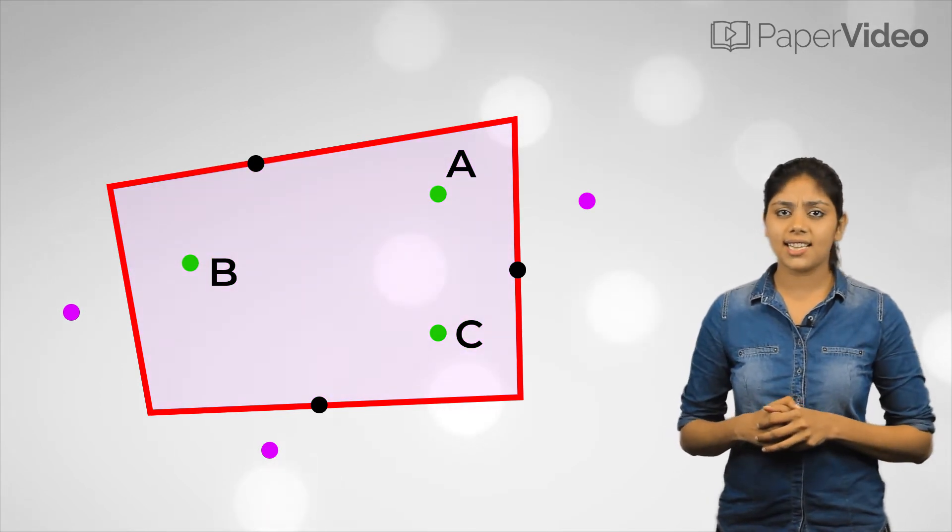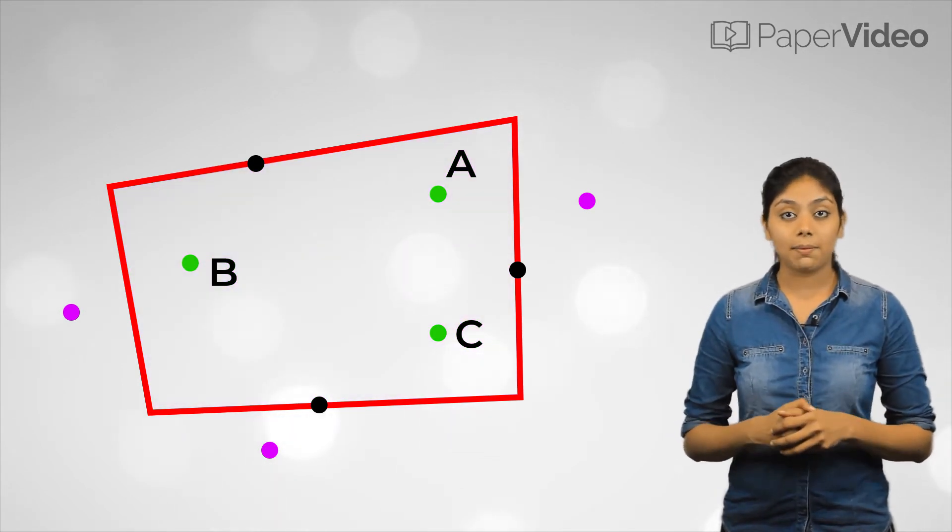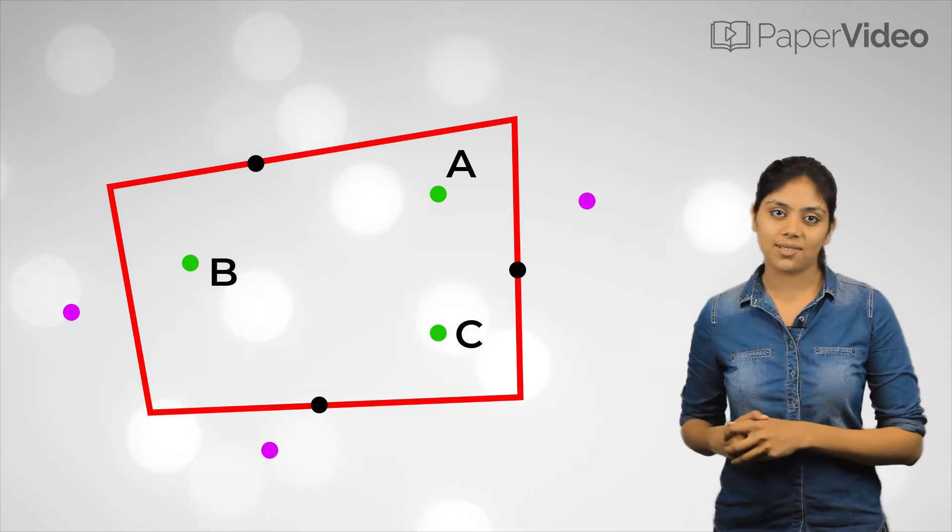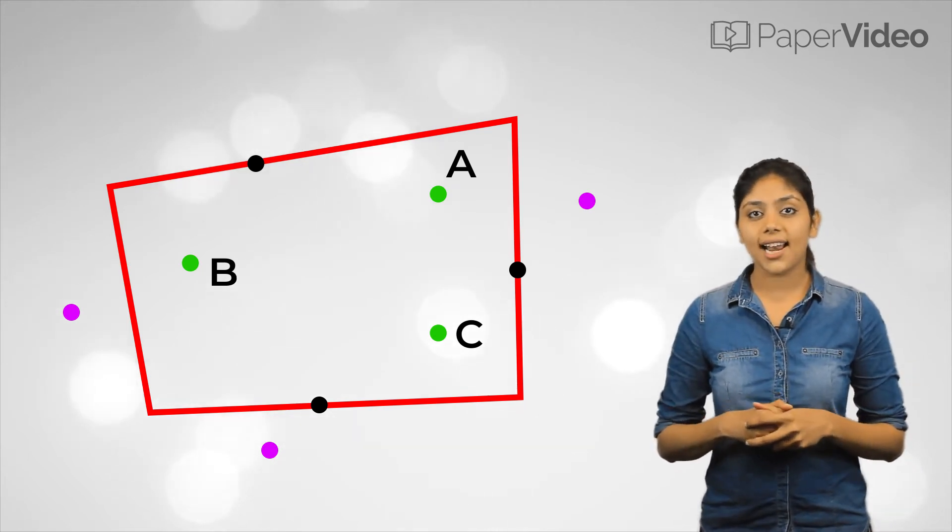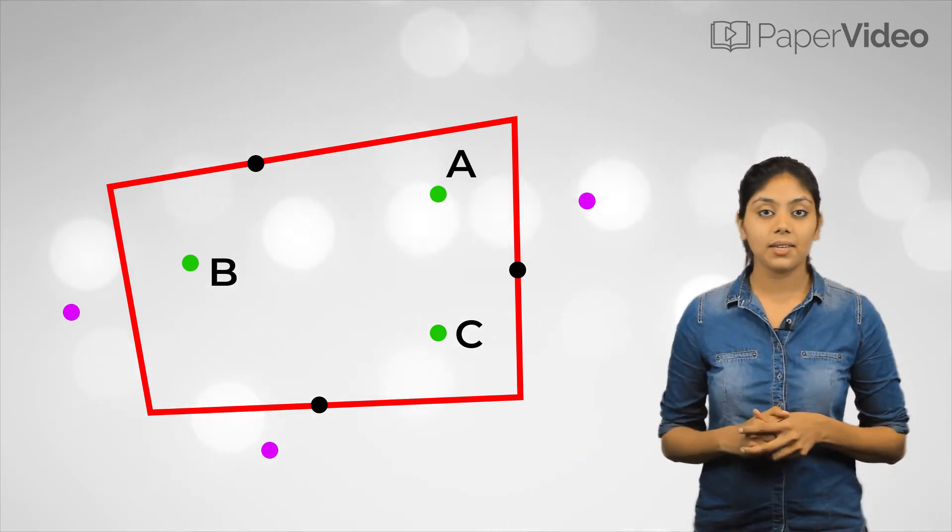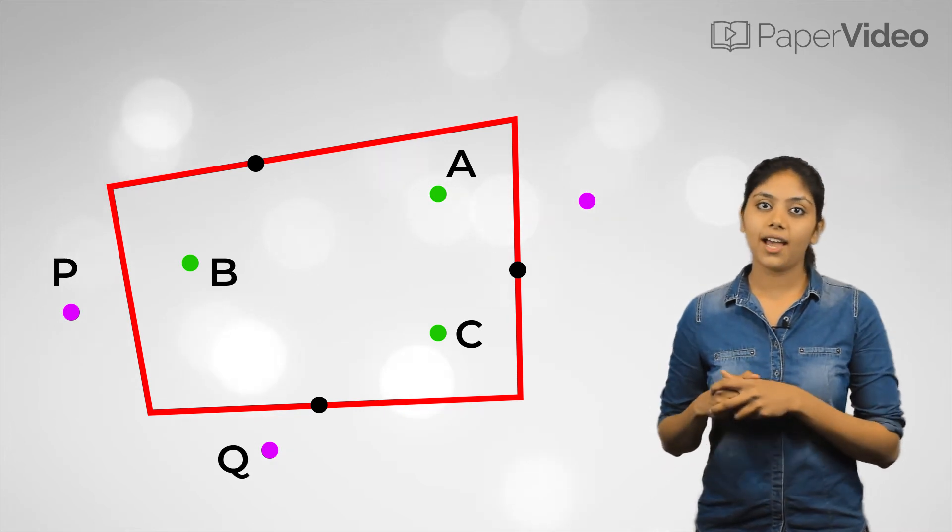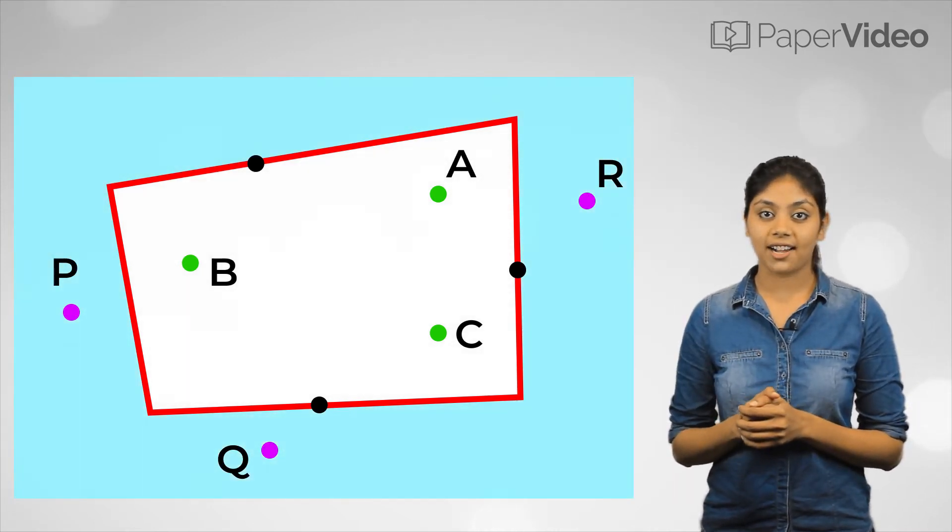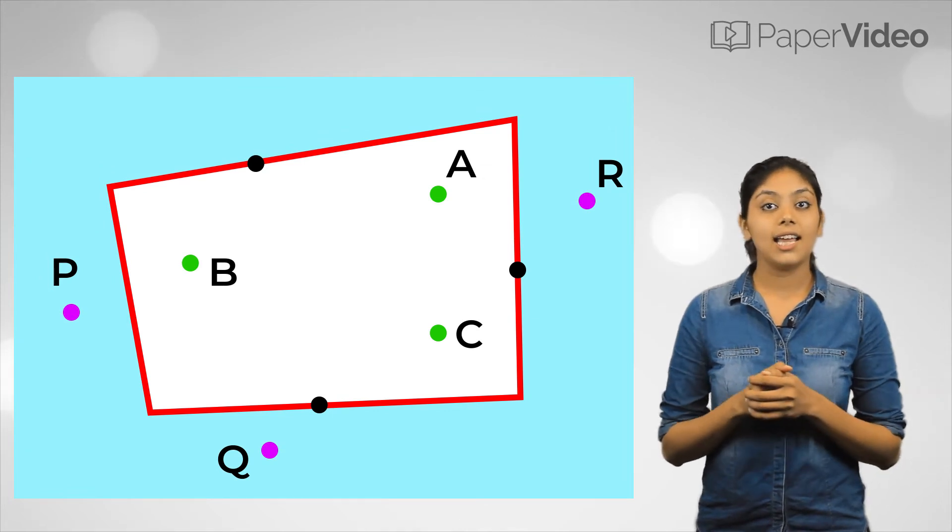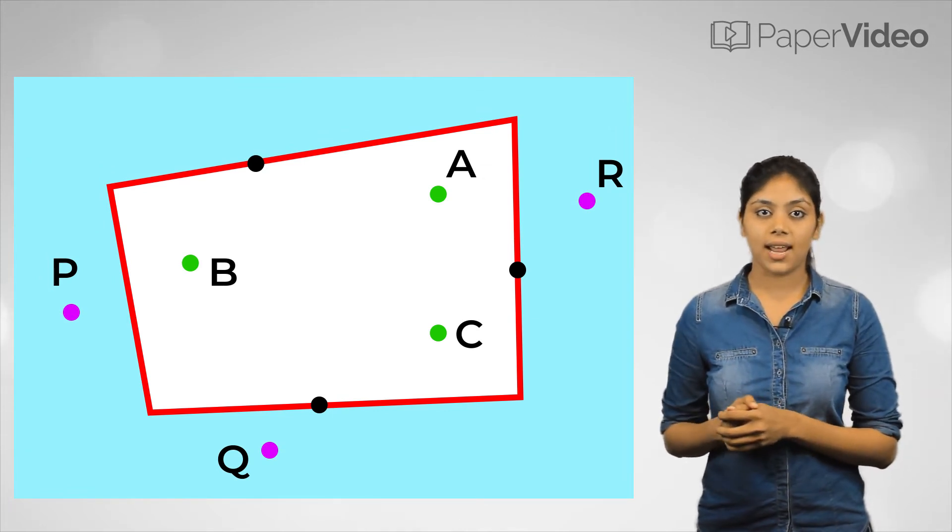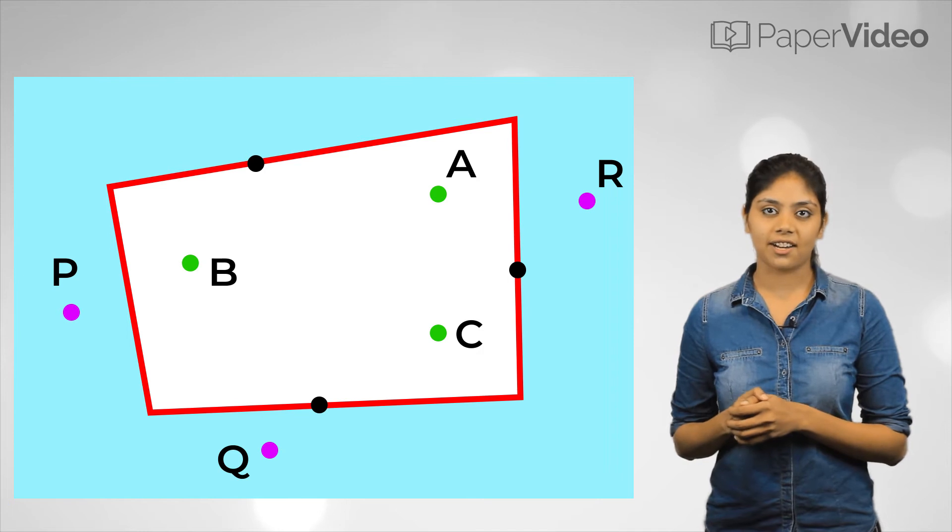What does it mean when I say exterior? It means something which is outside. Can you name the points that lie outside the quadrilateral? Points P, Q and R. If we shade the outside of the quadrilateral in blue, then this blue shaded region is known as the exterior of the quadrilateral.